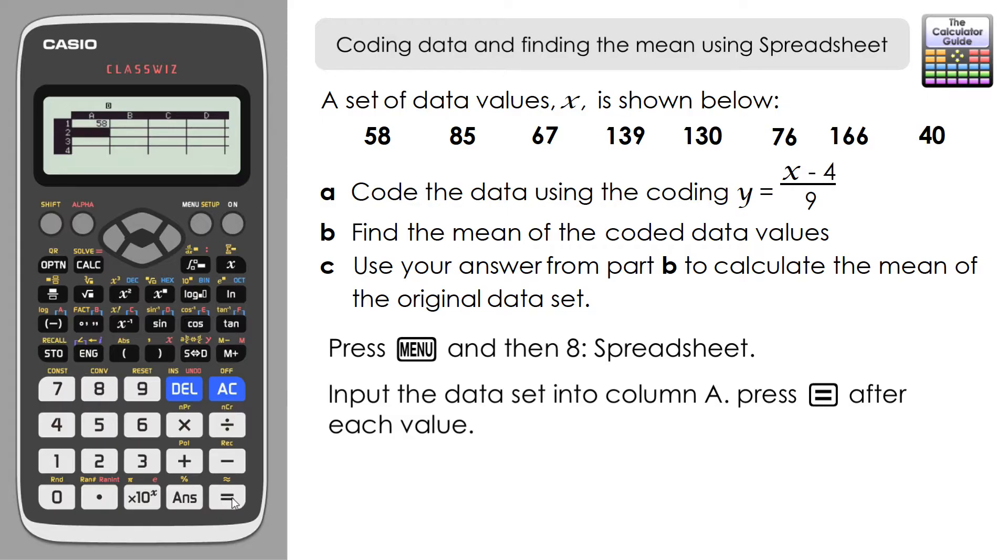Input the given data into column A. Each time you input a value, just press equals and it will automatically scroll down to the next row. Once you've inputted the last piece of data which is 40, navigate back up to the top.